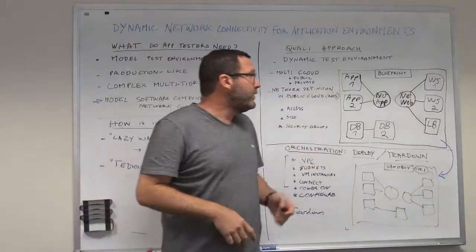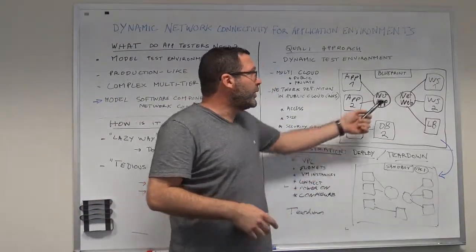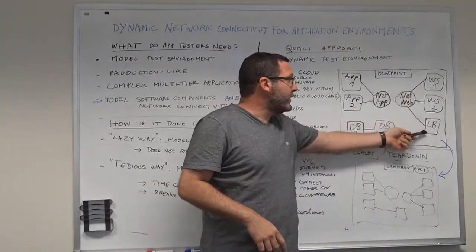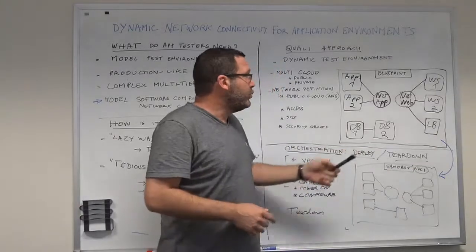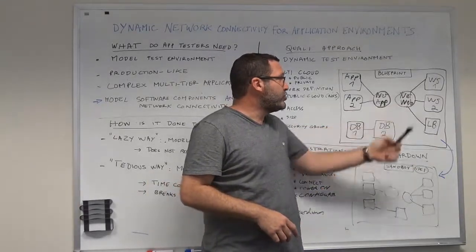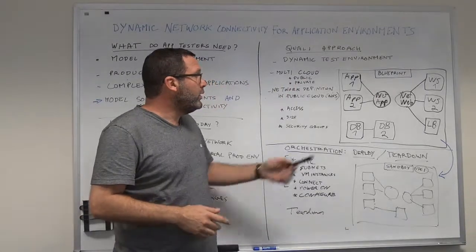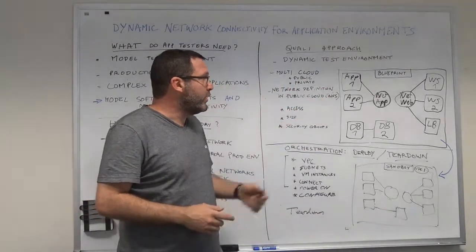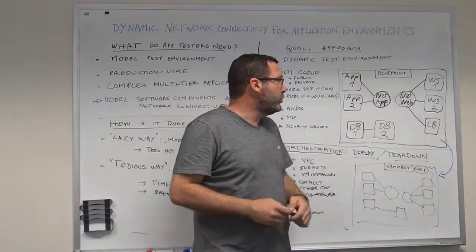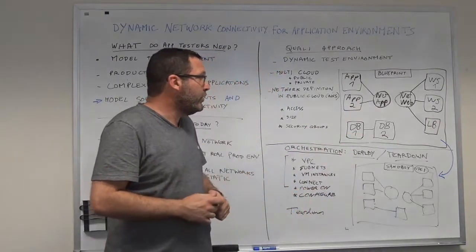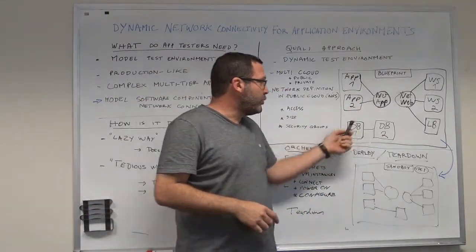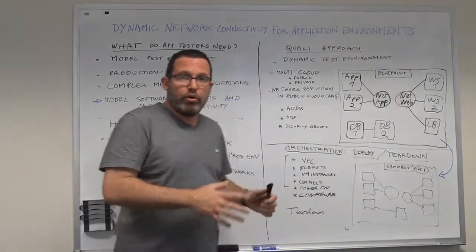Let's take a simple example where we have two web servers and a load balancer that we want connected to each other under one network—let's call it a web network. We have two application servers that we want connected to an application network, and two databases that we want in their own network.